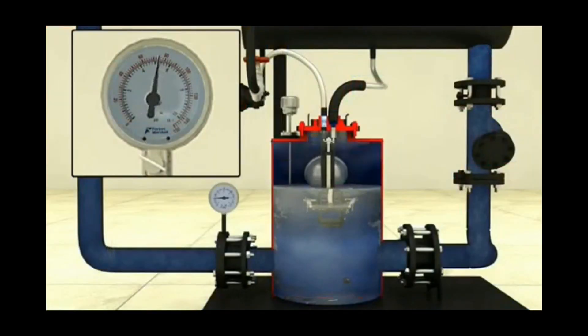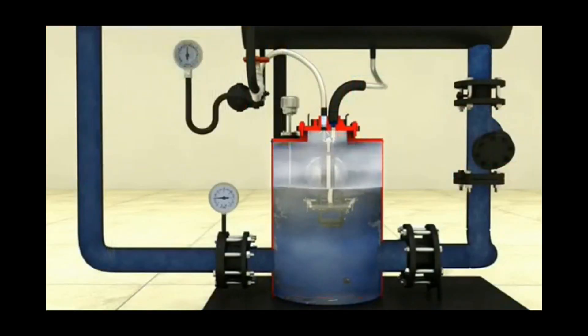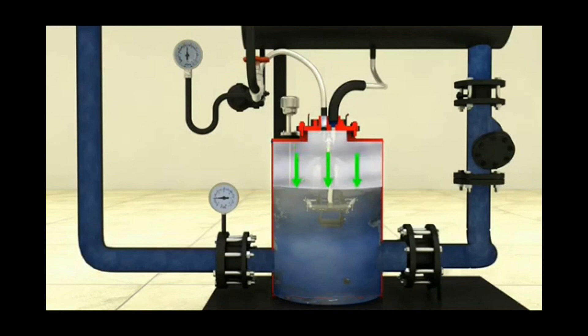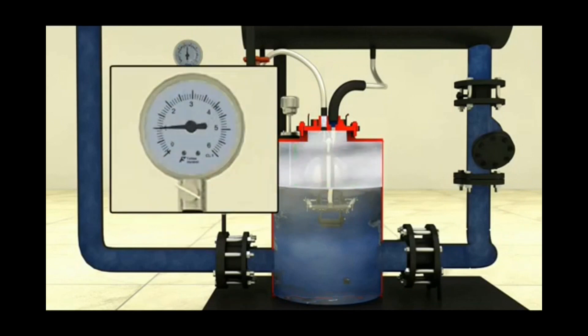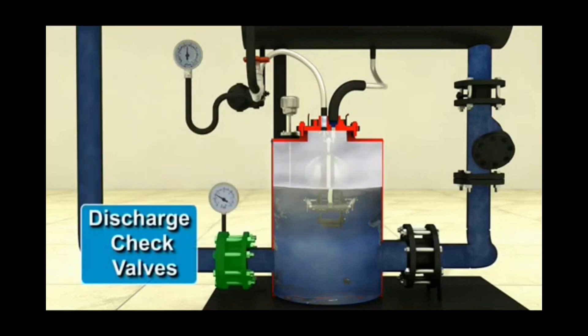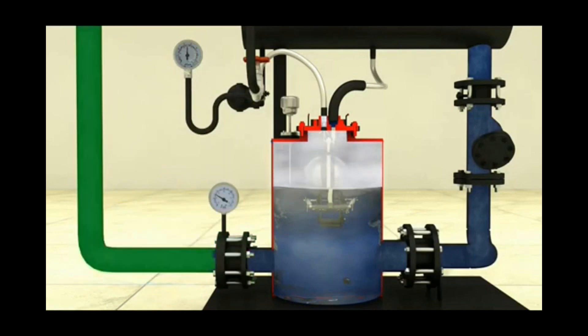Steam flow through the inlet valve increases the pressure within the body and closes the inlet check valve. When the pressure in the shell exceeds the back pressure in the condensate discharge line, it opens the discharge check valve and forces out the condensate in the discharge line.